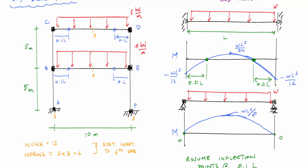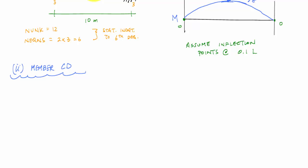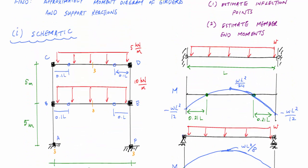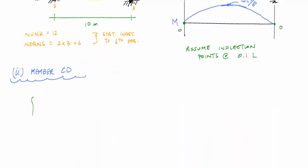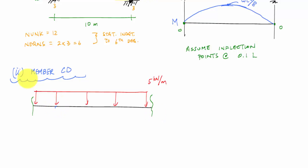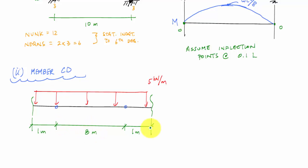Let's start with member CD — this top member. I'll cut out member CD and draw it with the loading, placing hinges at 0.1L. The length of this member was 10 meters, so the hinge is located at 0.1 times 10 = 1 meter from each end. That makes the center part 8 meters, with the whole length being 10 meters.